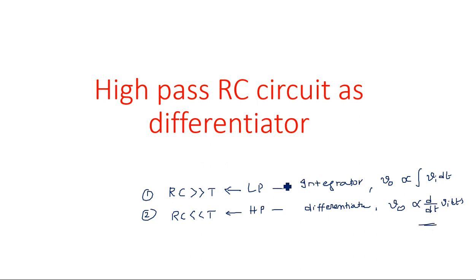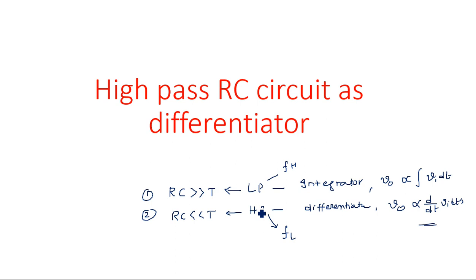To elaborate on the differences: the low pass RC circuit has a higher cutoff frequency, and the high pass RC circuit has a lower cutoff frequency. Bandwidth equals the higher cutoff frequency in both cases, since the other frequency boundary is not present.